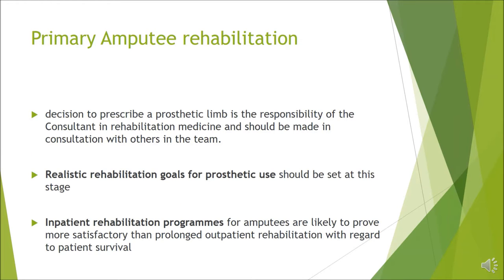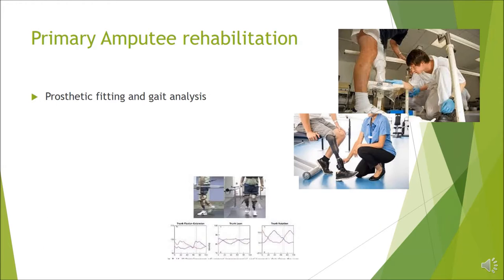Setting realistic rehabilitation goals for prosthetic use is very important, always keeping in mind the patient's expectations. Research has proven that inpatient rehabilitation programs for amputees are likely to be more satisfying. The next phase is prosthetic fitting and gait analysis. Following fabrication of the device, prosthetic fitting is done by a prosthetist, and gait analysis to identify any gait deviation is followed to make necessary modifications. In other countries, gait analysis is done in gait labs incorporating computer-generated 3D kinematics and kinetic data, but we analyze with clinical and video-based data.